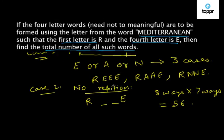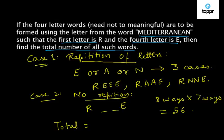If we see what is the total number of all words which can be formed using the letters from this word Mediterranean, we will get total is equal to the number of words formed through case one and the number of words formed through case two is 56. The total number of words is 59, and this is our answer.